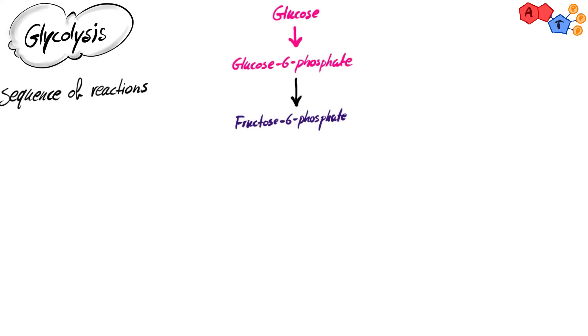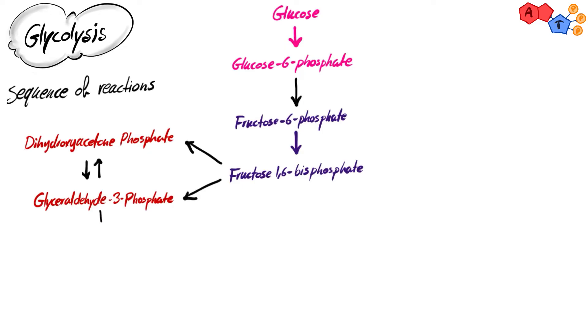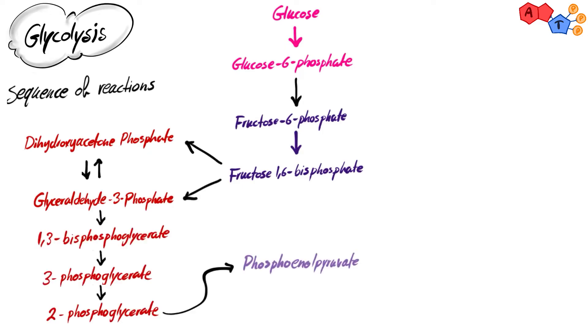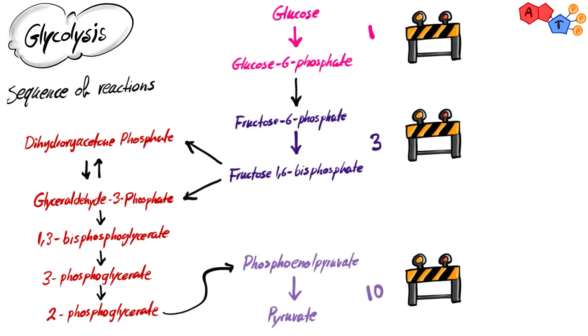Glycolysis — the breakdown of glucose — consists of ten reactions, seven of which are reversible and three of which are irreversible. Because of these three irreversible reactions at steps one, three, and ten, gluconeogenesis does not simply occur by the reversal of glycolysis. These reactions must be replaced by reactions that favor the production of glucose. Think of these irreversible reactions as obstacles or roadblocks that must be overcome. Working backwards, the first roadblock is reaction ten of glycolysis.